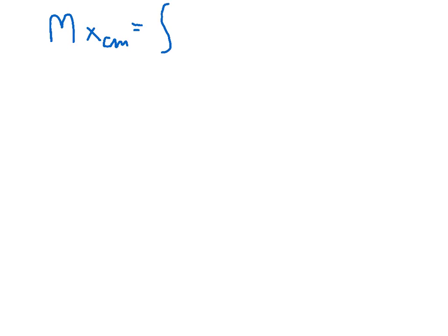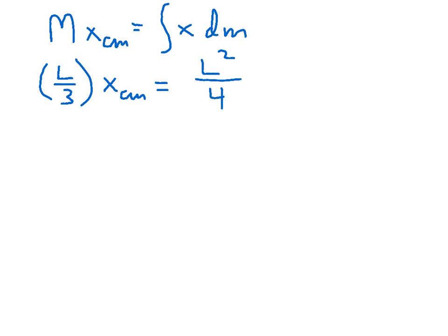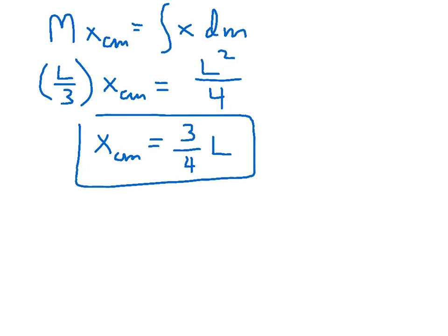Going back to the original equation, M times x center of mass equals the integral of x dm. The total mass is L over 3, and the integral of x dm is L squared over 4. Rearranging with a little algebra, we find that x center of mass is located at three-fourths L. That is our answer — we just found the center of mass of a non-uniform rod.